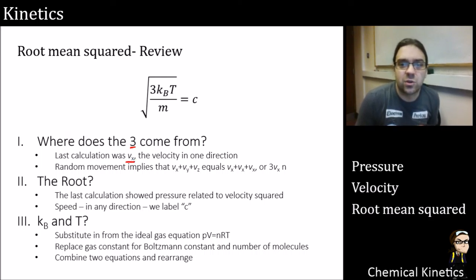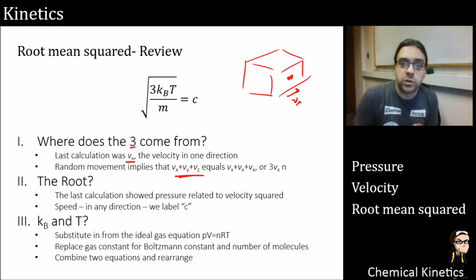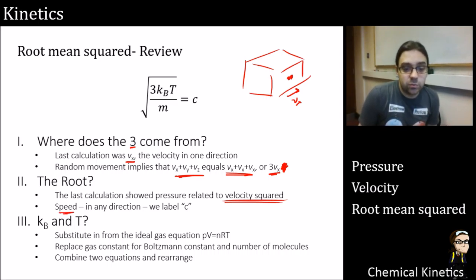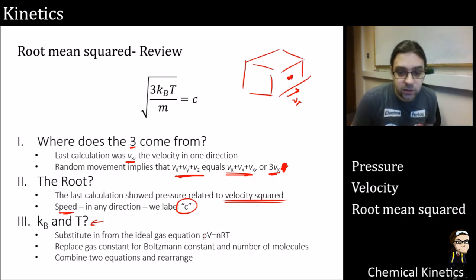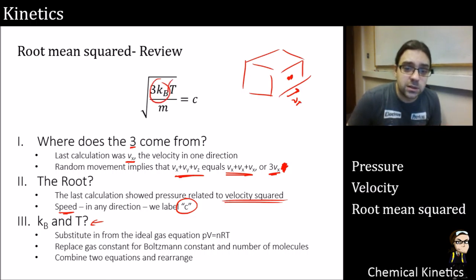To review where root mean squared comes from: the 'three' comes from the fact our thought experiment was in terms of vx — one dimension — and random movement implies all three directional velocities are equal, so we substitute three times the one-dimensional value. The 'squared' comes because pressure was related to velocity squared, so taking speed c requires a square root. The kb and T come from substituting in the ideal gas law, replacing N and R with the Boltzmann constant and number of molecules. Combining the two equations cancels out the number of molecules, the volume, and the area — leaving only Boltzmann constant, temperature, and mass.